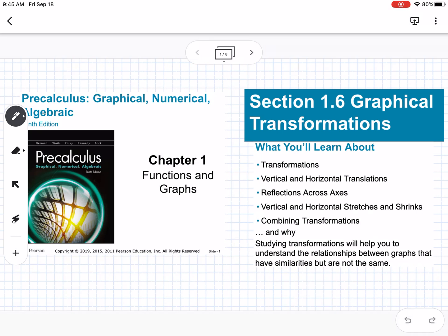This is section 1.6, which is graphical transformations. So what we're going to talk about is transformations, vertical and horizontal translations, reflections across axes, and vertical and horizontal stretches and shrinks, and then combining all these.